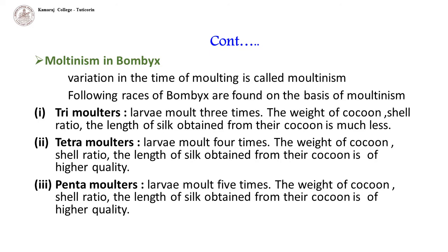Following races of Bombyx are found on the basis of moltinism. Trimolters: their larvae molt three times in their larval period. The weight of cocoon shell ratio and the length of silk obtained from their cocoon is much less. Pentamolters: their larvae molt five times in their larval period. The weight of cocoon shell ratio and the length of silk obtained from their cocoon is of higher quality.